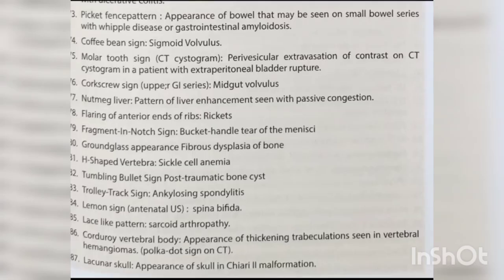Picket fence pattern — appearance of bowel seen on small bowel series with Whipple disease or gastrointestinal amyloidosis. Coffee bean sign — sigmoid volvulus. Molar tooth sign — perivesicular extravasation of contrast on CT histogram in a patient with extraperitoneal bladder rupture. Corkscrew sign on upper GI series — midgut volvulus. Nutmeg liver — pattern of liver enhancement seen with passive congestion.